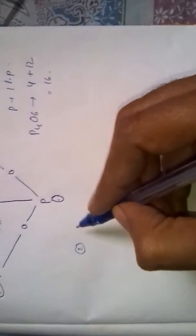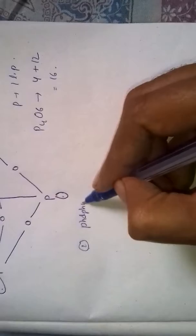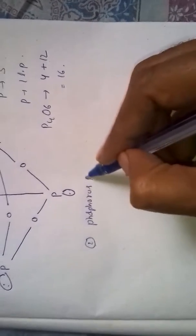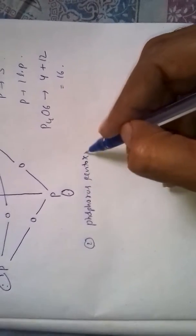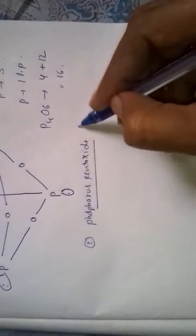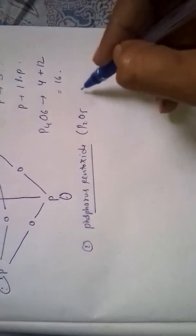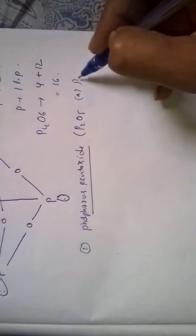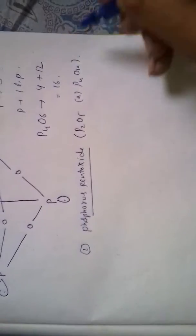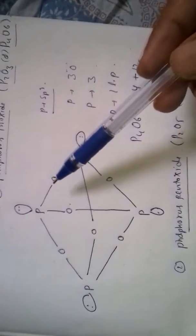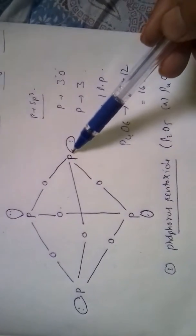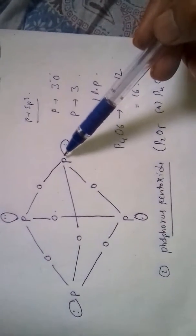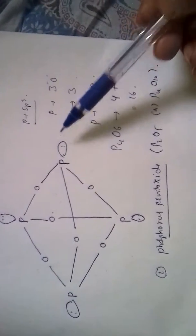The formula is P2O5. It also exists as a dimer, so P4O10. The structure is similar to phosphorus trioxide structure. At these positions, a double bond is formed between phosphorus and oxygen atoms.